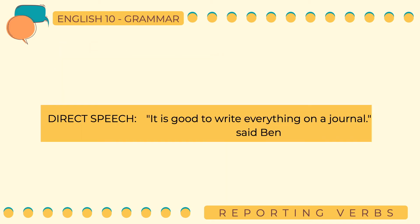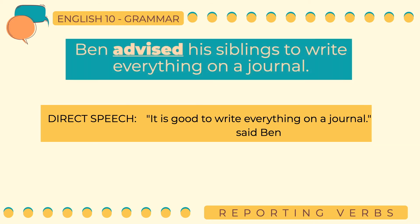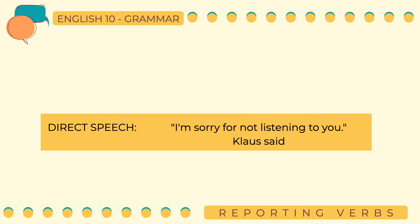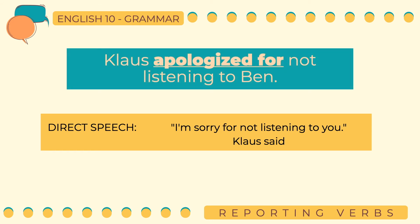In the direct speech, 'It is good to write everything on a journal,' said Ben. We can use the reporting verb 'advised' since this statement is an advice from Ben to his siblings. So the reported speech is: 'Ben advised his siblings to write everything on a journal.' Looking at another direct speech: 'I'm sorry for not listening to you,' said Klaus. This statement is an apology. Therefore, we can use the reporting verb 'apologized for' when transforming the sentence to reported speech. The reported speech is: 'Klaus apologized for not listening to Ben.'